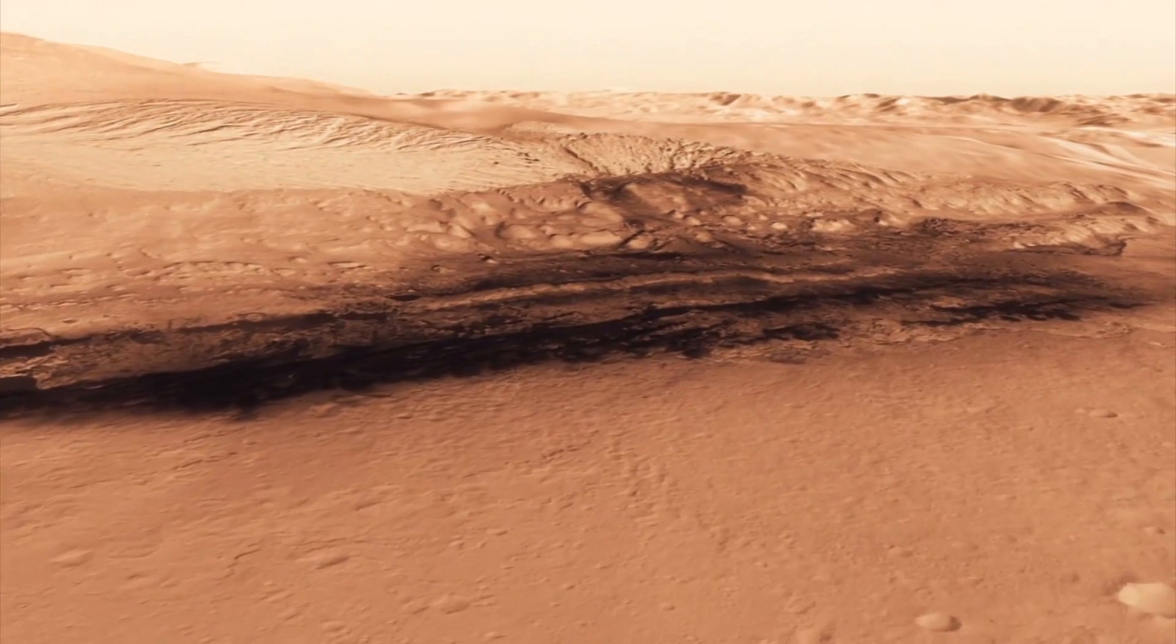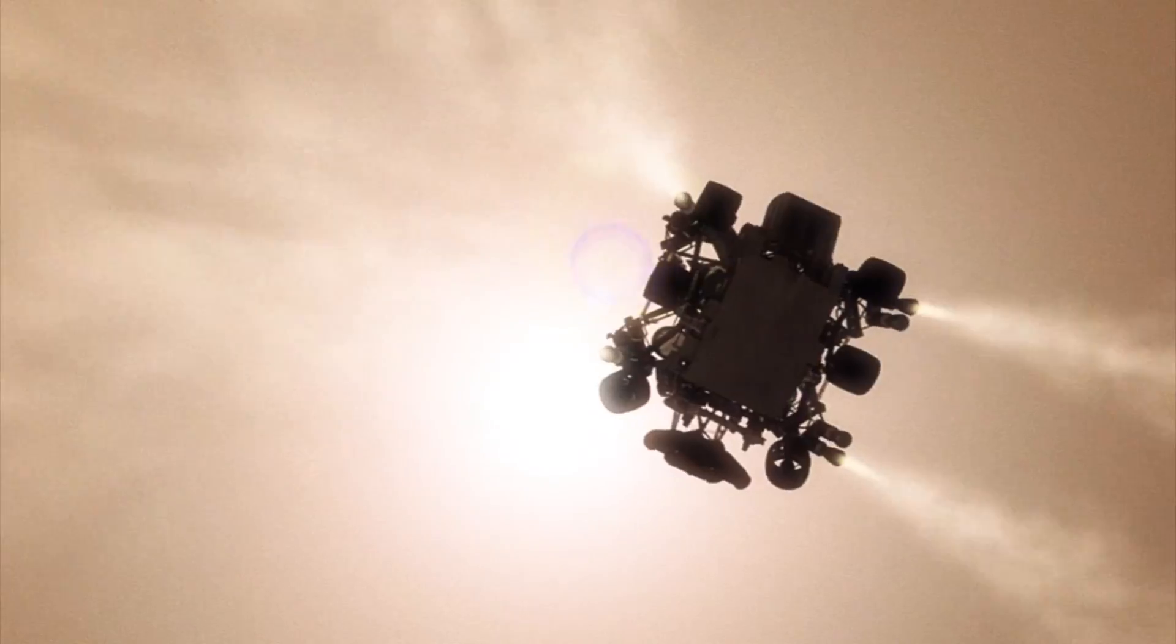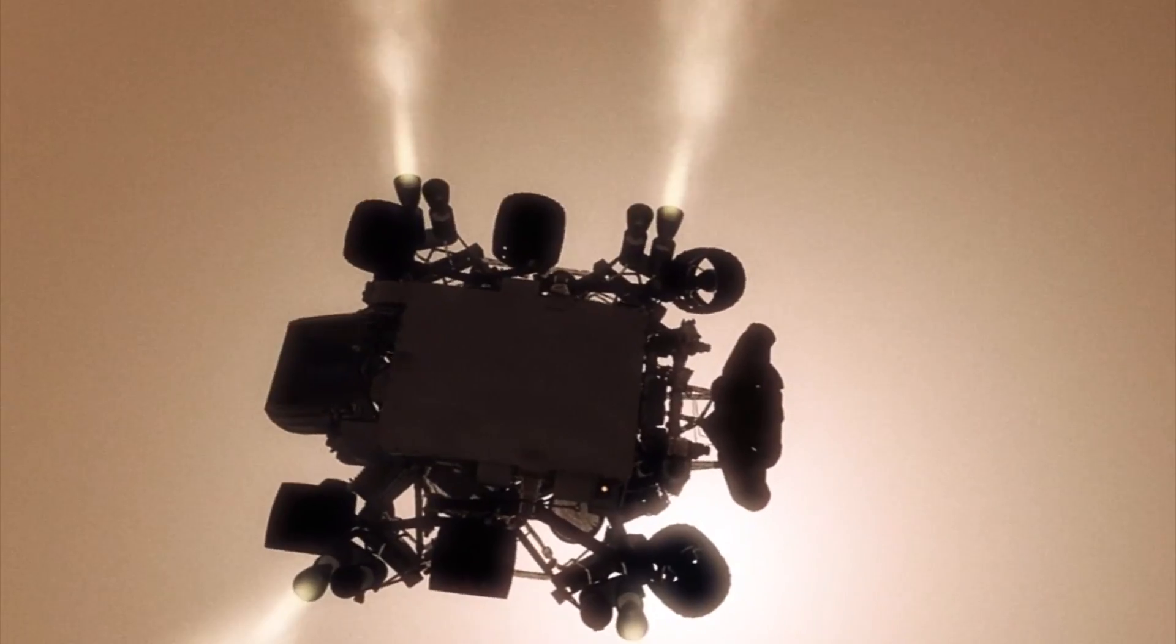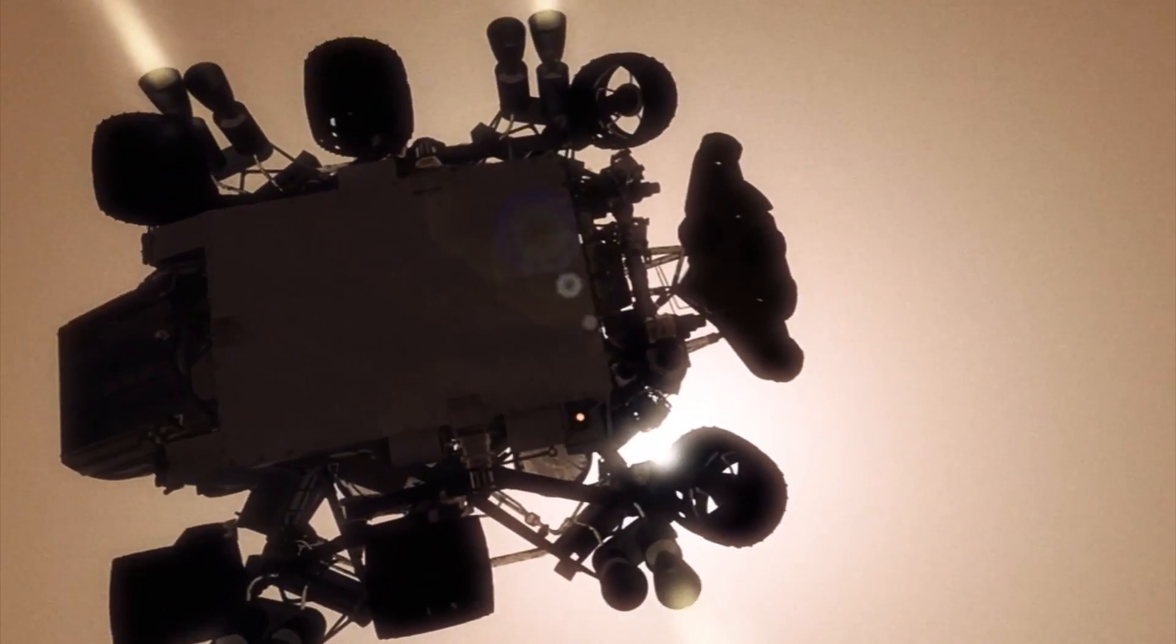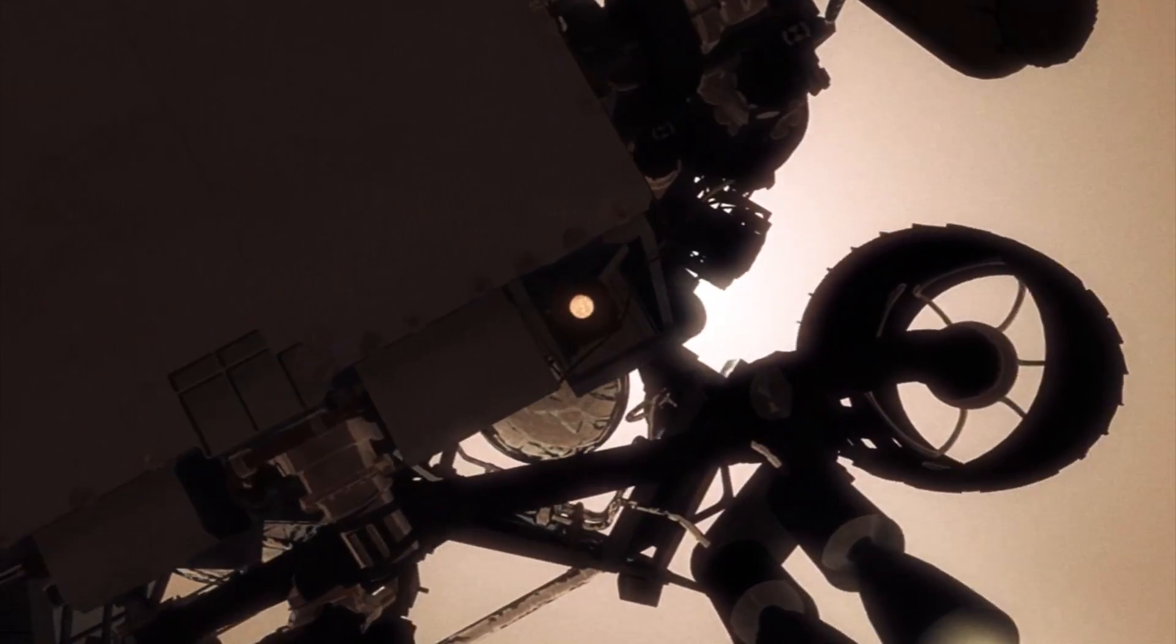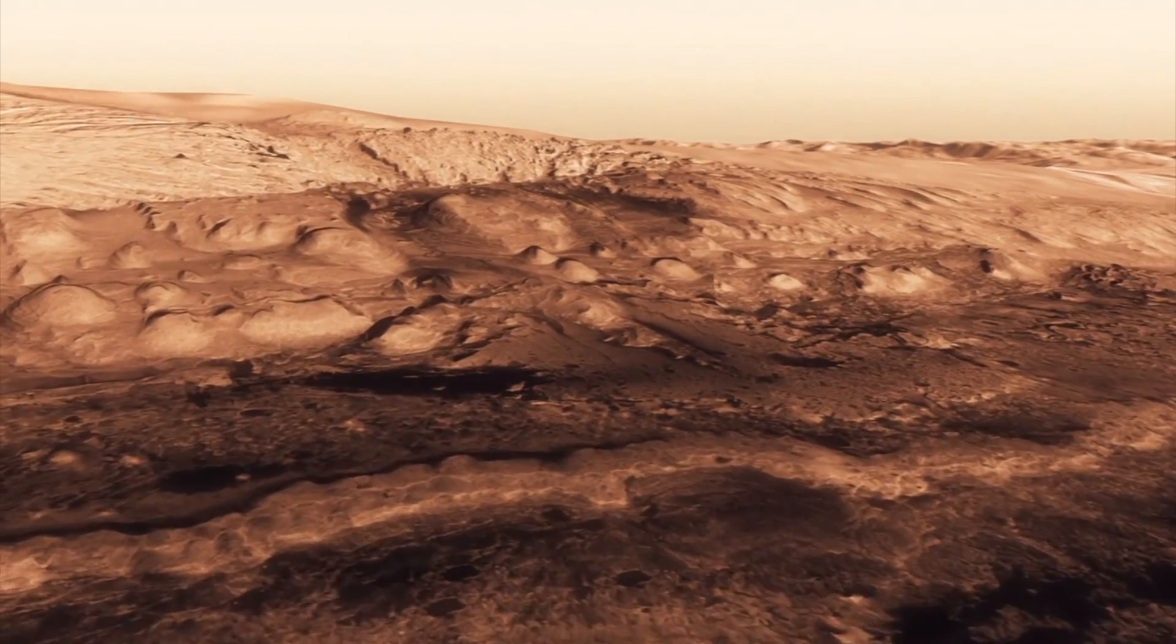We can't get those rocket engines too close to the ground, because if we were to descend propulsively with our engines all the way to the ground, we would essentially create this massive dust cloud. That dust cloud could then go and land on the rover. It could damage mechanisms and it could damage instruments.